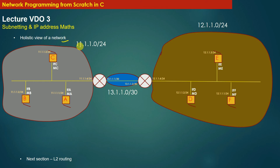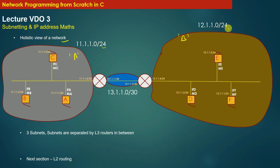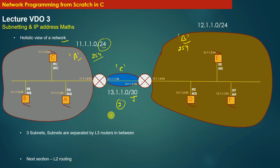Finally, let's take a holistic view of a network — how networks are usually formed and organized. In this example there are three subnets. Subnet A has the subnet ID 11.1.1.0/24, subnet B has the network ID 12.1.1.0/24, and subnet C is on a point-to-point link with a network ID of 13.1.1.0/30. The mask value of 24 for subnets A and B means a maximum of 254 machines can be attached, while subnet C with mask /30 can have strictly two devices.